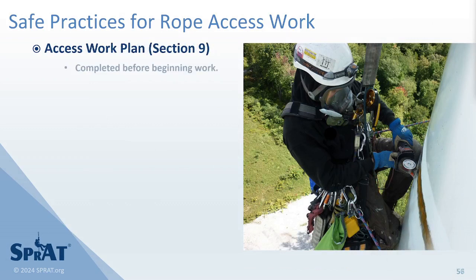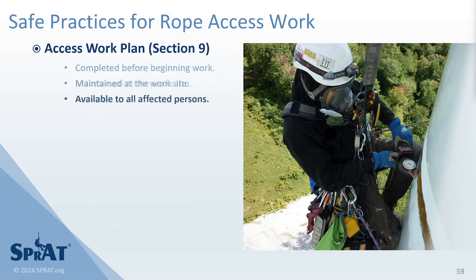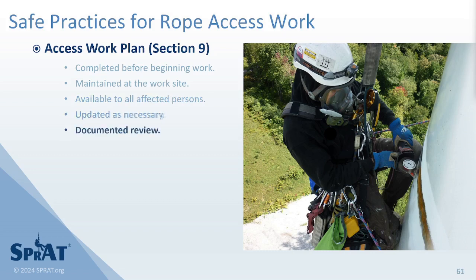Prior to beginning rope access work, a rope access supervisor must ensure completion of an access work plan. The access work plan must be maintained at the worksite, available to all affected persons, and updated as necessary during the course of rope access work. A documented review of the access work plan must be conducted prior to each work shift and after updates.